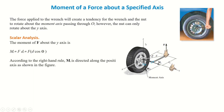The moment produced in the wrench is about an axis, and we can calculate this moment by two methods. The first method is scalar analysis and the second method is vector analysis. So first we will discuss the scalar analysis.